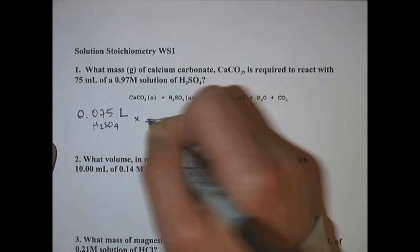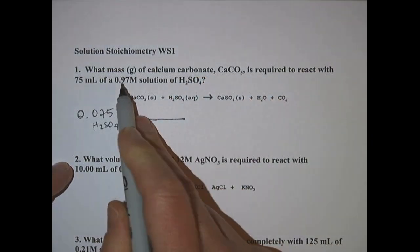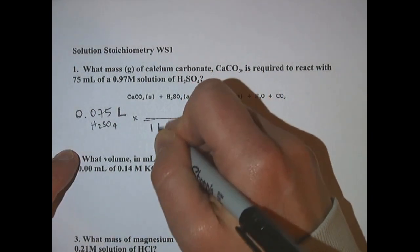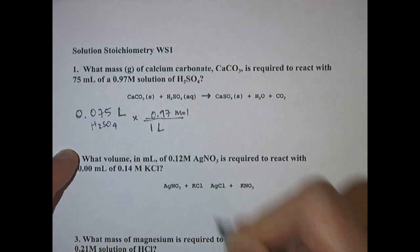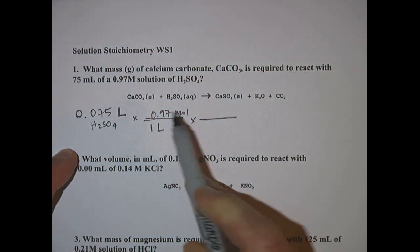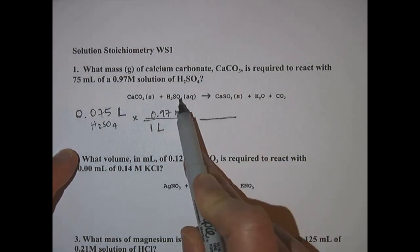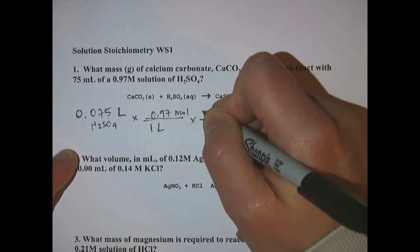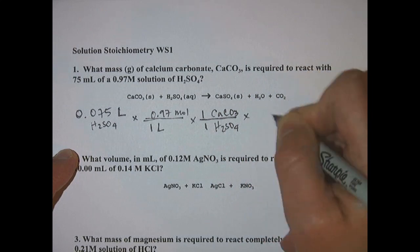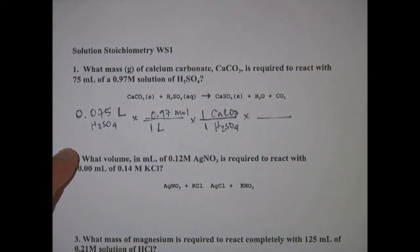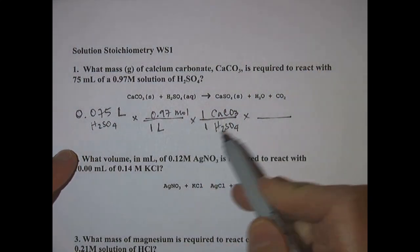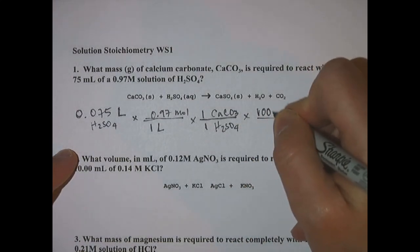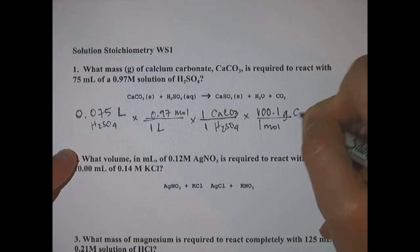If you want to get from liters into moles you have to use the molarity, so that 0.97 molar means 0.97 moles per liter. One liter on bottom and 0.97 moles on top. We want to go from H2SO4 to calcium carbonate, so it is a one to one ratio. However you want your answer in grams of calcium carbonate, so to come out of the mole ratio we need the molar mass of calcium carbonate which is 100.1 grams per mole of CaCO3.